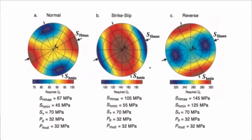This is the minimum required unconfined compressive strength at which we would not observe any breakouts. Remember, just because you see a tiny little breakout doesn't mean you're going to have an unstable wellbore. But if you have a rock strength that's above the required C0, then you will not see any breakouts, and if there are no breakouts, you'll absolutely have a stable wellbore.